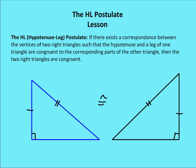The hypotenuse leg postulate, which you can abbreviate as HL postulate, says that if there exists a correspondence between the vertices of two right triangles, such that the hypotenuse and the leg of one triangle are congruent to the corresponding parts of the other — the hypotenuse and the leg of the other — then the two right triangles are going to be congruent.